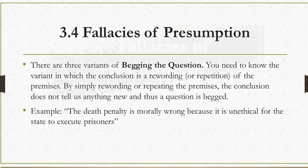Here's an example: 'The death penalty is morally wrong because it is unethical for the state to execute prisoners.' The conclusion is that the death penalty is morally wrong, and the premise is that it is unethical for the state to execute prisoners — indicated by the word 'because.' The premise is being repeated or reworded in the conclusion, so nothing new is being said. This begs the question: why is the death penalty morally wrong?